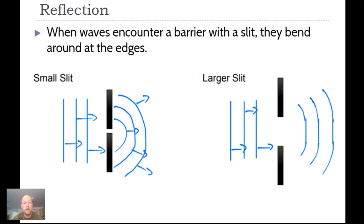When waves encounter a barrier with a slit, they bend around at the edges. With a small slit, the first part travels unimpeded forward while the rest picks up a little. Playing around with waves in water — like in a bathtub — helps you notice these properties through observation. With a larger slit, waves still bend too: some passes through unimpeded and some bends to the sides.